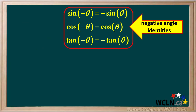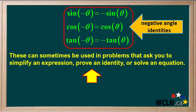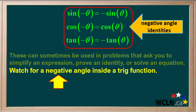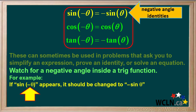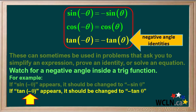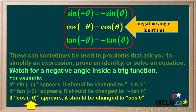It's important to know these three identities involving negative angles. They can appear in problems that ask you to simplify an expression, prove an identity, or solve an equation. Watch for a negative angle inside a trig function. For example, if sine of negative theta appears, it should be changed to negative sine theta. If tan of negative theta appears, it should be changed to negative tan theta. But if cosine of negative theta appears, it should be changed simply to cosine theta, not negative cosine theta.